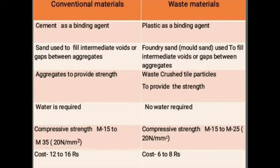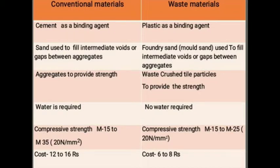Here is the difference between conventional material and our waste material paving blocks. Cement is used as the binding agent in conventional blocks, whereas plastic is used as the binding agent in ours. Sand fills intermediate voids in the conventional method, while foundry sand (mold sand) fills voids in our block. Conventional aggregates provide strength, whereas waste crushed tile particles provide strength in our block. Water is required in the conventional method, but no water is required in our paving blocks.